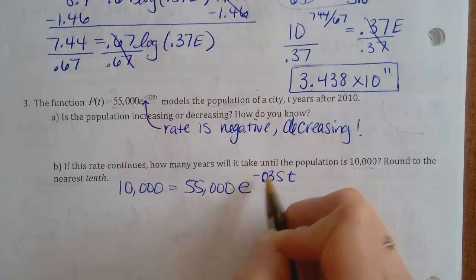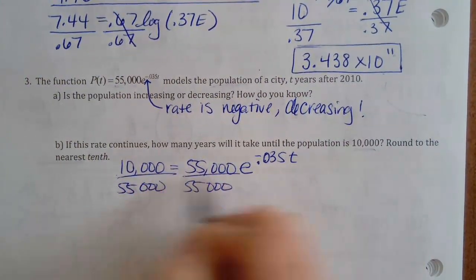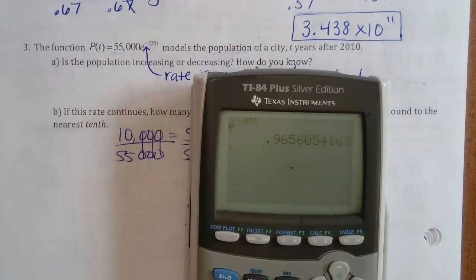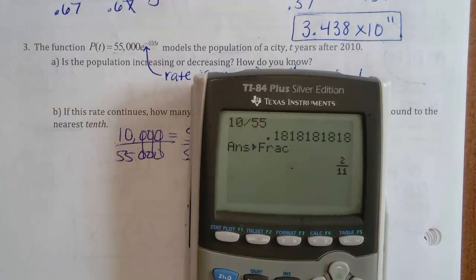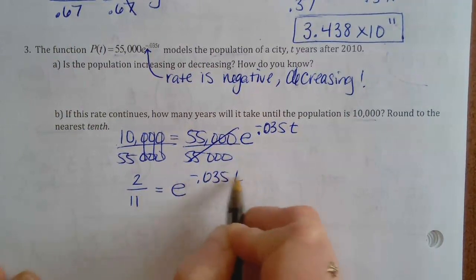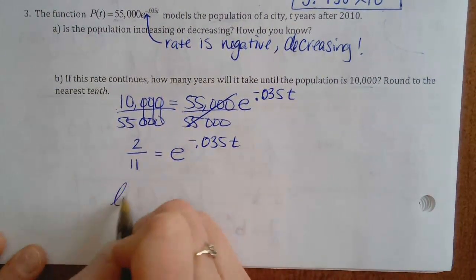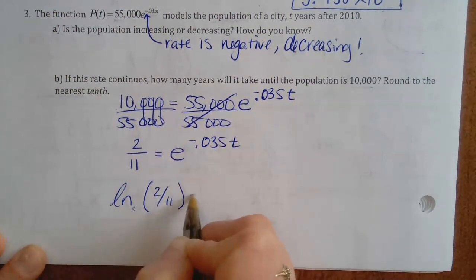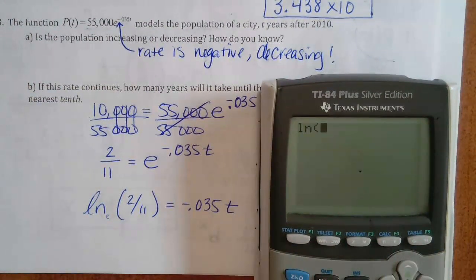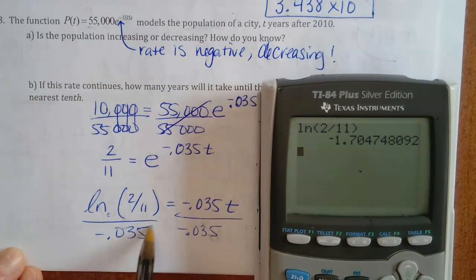Isolate — divide by 55,000. That's gone. 10 over 55 reduces to 2 over 11. We have e to the negative 0.035T. It's an exponential with base e, so we need a natural log. Natural log of 2/11 equals negative 0.035T.